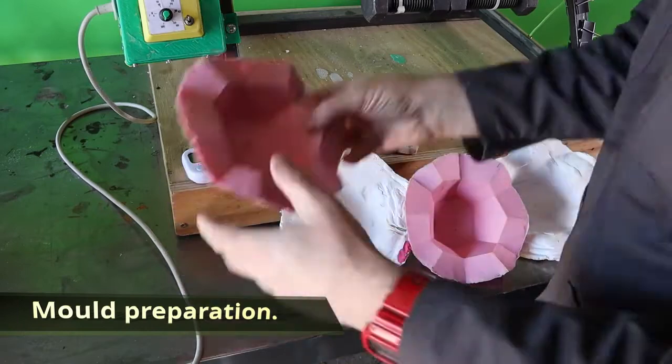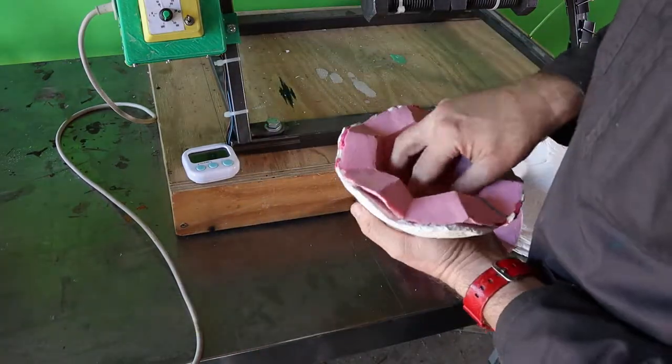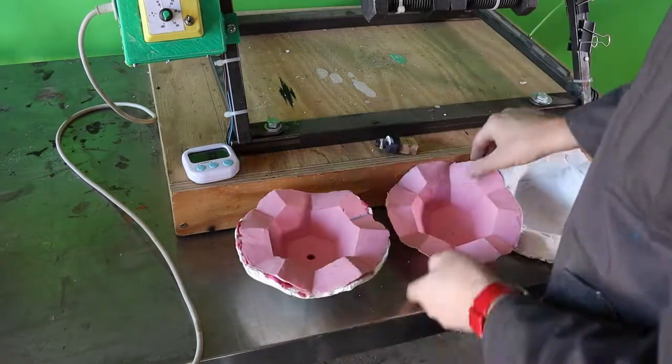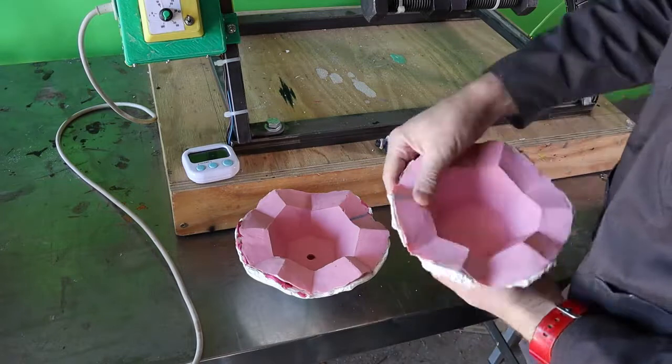It's a two-part silicone mold with a rigid plaster support and a small 3D printed mold plug, which you can see allows for the mold to be placed in the machine and only then resin filled into the mold.